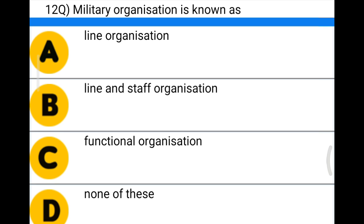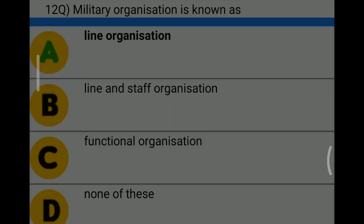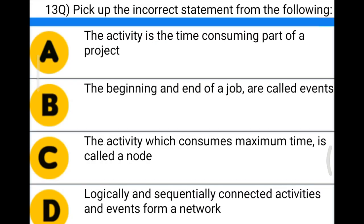Next question: military organization is known as — Option A: line organization, Option B: line and staff organization, Option C: functional organization, Option D: none of the above. The correct answer is Option A, line organization.